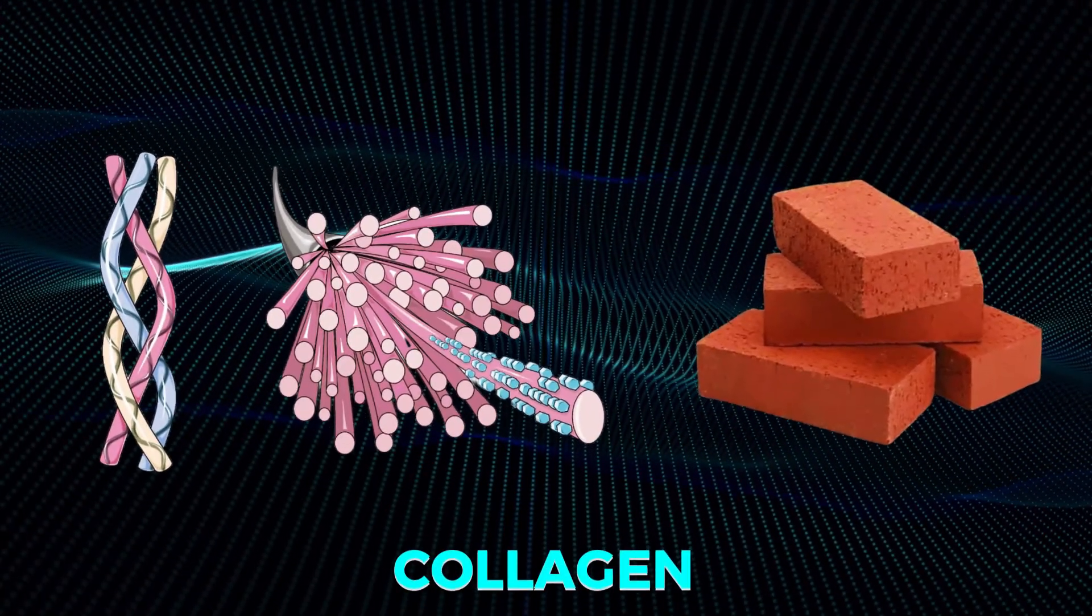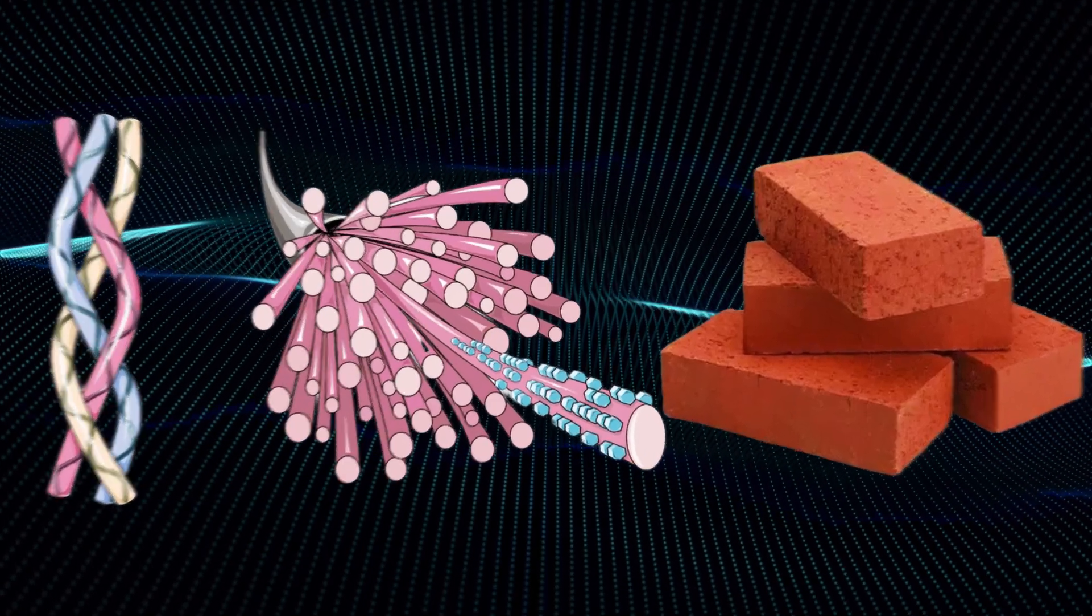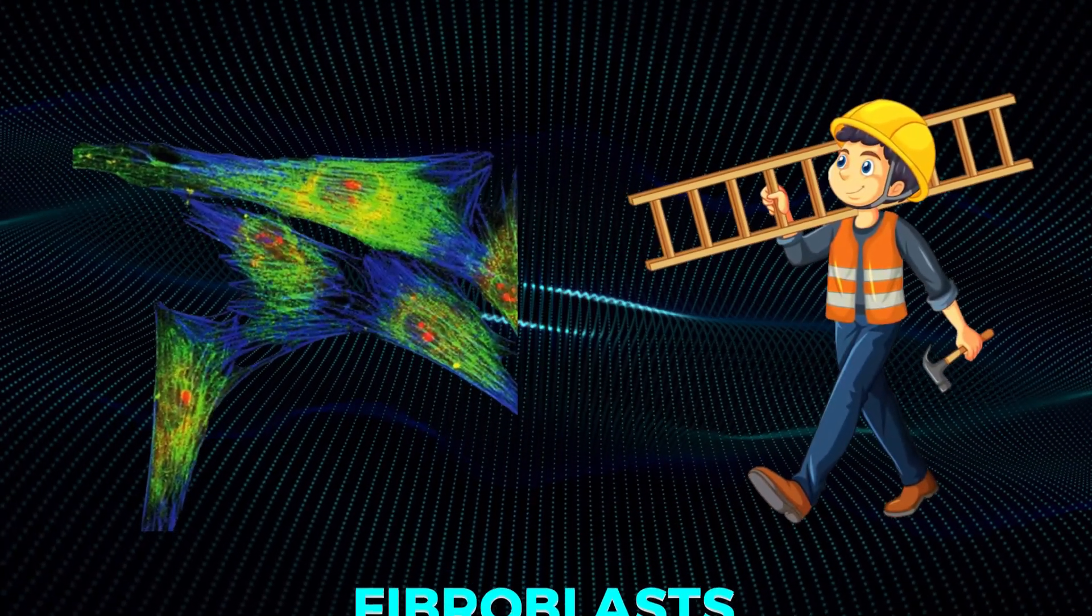To understand this more easily, just think of it like building a house. Collagen is like the bricks, providing the basic structure, while the fibroblasts are like the construction workers, constantly repairing and maintaining the skin.